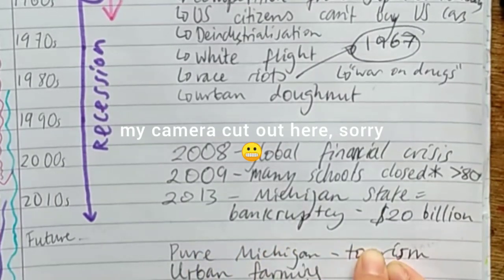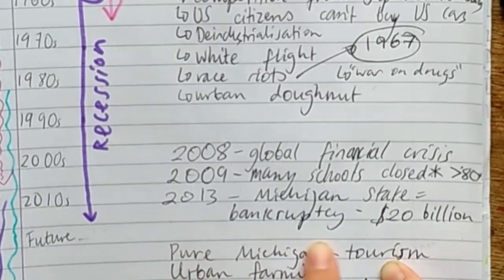In 2013, Michigan State filed for bankruptcy with debts of 20 billion USD.